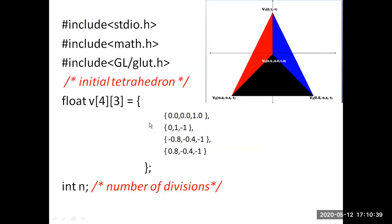In the program, we include the required libraries. We initialize the tetrahedron's 4 vertex coordinates v0, v1, v2, and v3 along the x, y, z axes. Every vertex coordinate is specified by x, y, z coordinates. A variable n is declared of integer type to indicate the number of divisions for the user to enter.